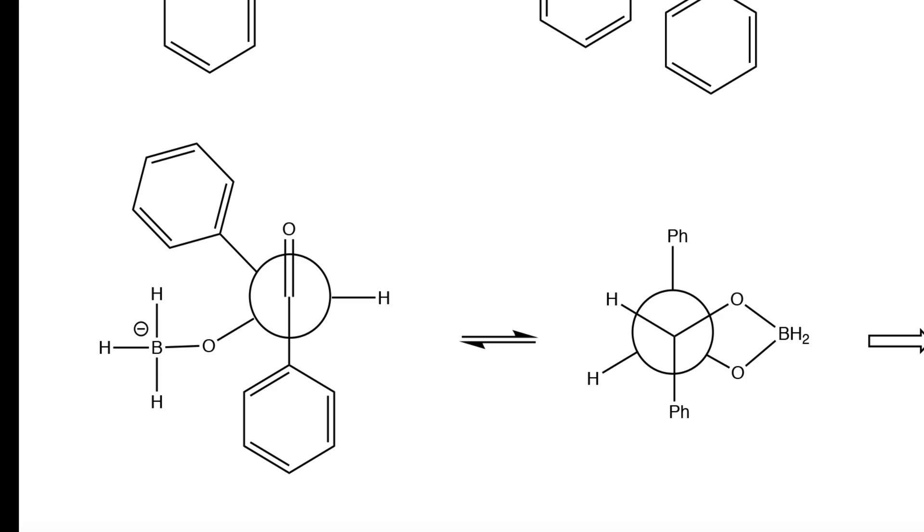So now that we've figured out that this is the most stable conformation that will form, the second reduction of this carbonyl will occur. And it will occur where this hydride will attack the carbonyl carbon,